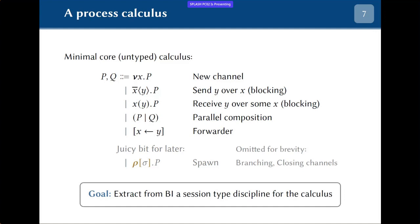We have this process calculus with basic primitives, and a lot can go wrong if you just run it — deadlocks and all sorts of problems. What we want is to extract from the logic a type system that ensures some well-behavedness of the processes.